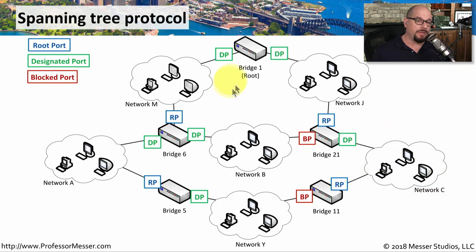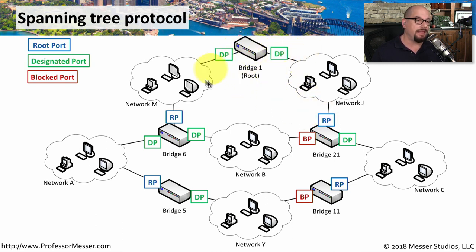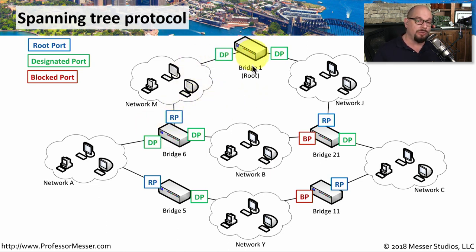Here's an example of a network that has many switches connected to each other. We have Bridge 1, Bridge 6, Bridge 21, Bridge 5, and Bridge 11 — all separate switches with multiple interfaces between them. These have different designations: anything marked RP is a root port, because one switch is designated as the root switch or root bridge. On any other switch, the interfaces closest to the root are called the root port. All other enabled interfaces are assigned as designated ports.